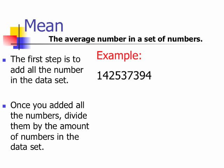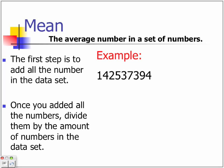So for example, 1 plus 4 plus 2 plus 5 plus 3 plus 7 plus 9 plus 4, all of them equal 35. And then since there's 9 numbers in all of these, you divide 35 by 9.